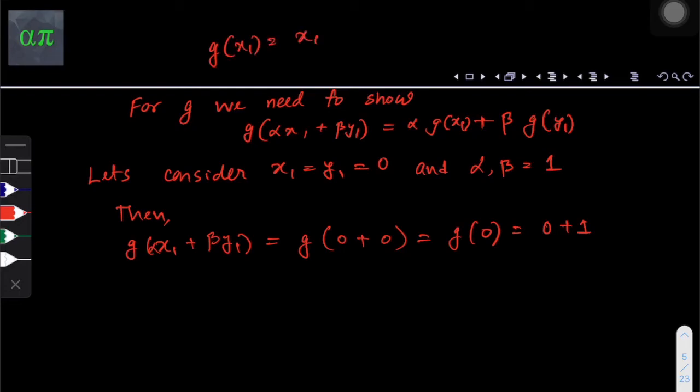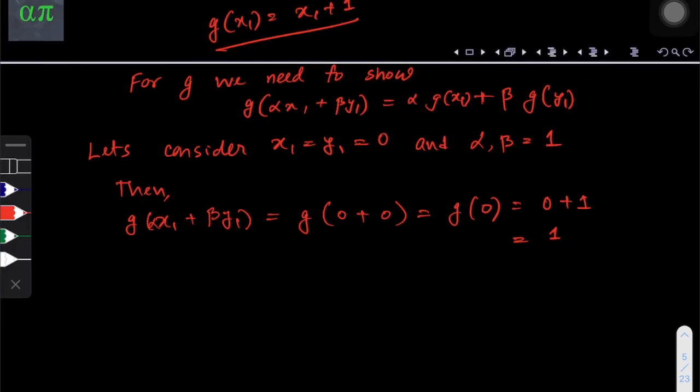So if this is the function, then this is how it's going to turn out to be. So g of alpha x₁ plus beta y₁ is equals to 1 in this case. And now let's evaluate the right hand side which is alpha g of x₁ plus beta g of y₁.